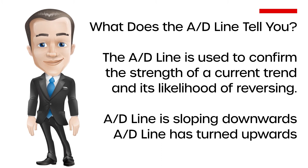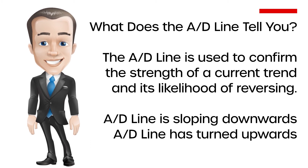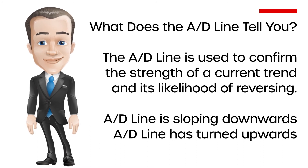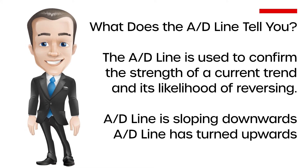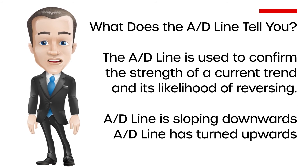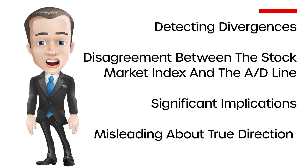The AD line tells you the strength of a current trend and its likelihood of reversing. It shows that the majority of stocks are participating in the direction of the market. If indexes are moving up but the AD line is sloping downward — called bearish divergence — it's a sign the market is losing breadth and may be about to reverse. Conversely, if indexes are moving lower and the AD line turns upward — called bullish divergence — it may indicate that sellers are losing conviction. If both the AD line and markets are trending lower together, declining prices are more likely to continue.